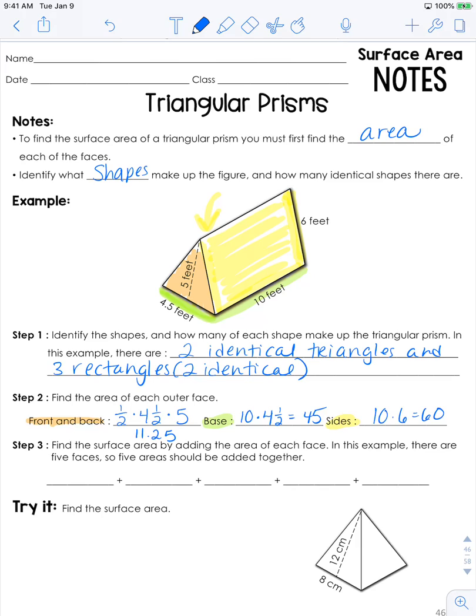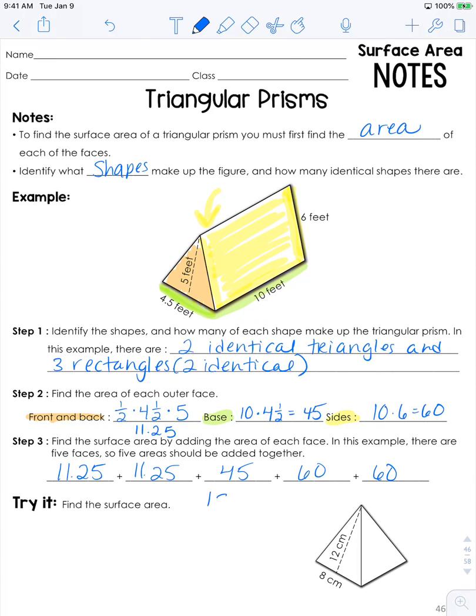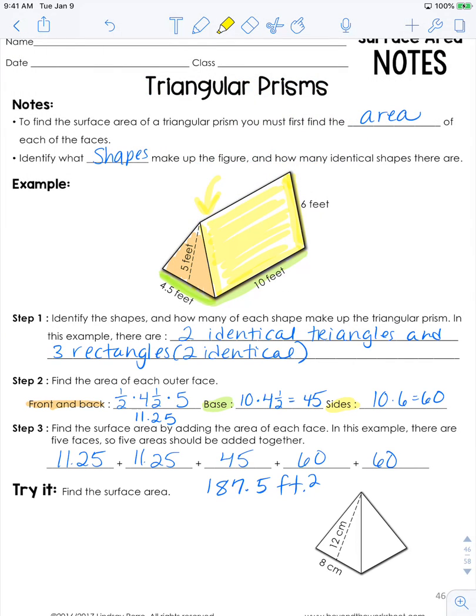We have our two identical triangle faces. So I'm going to write 11.25 in here twice, or you could just do 11.25 times 2. We have our single base with an area of 45 and then our two sides with an area of 60. So the total surface area of this triangular prism is 187.5 square feet.